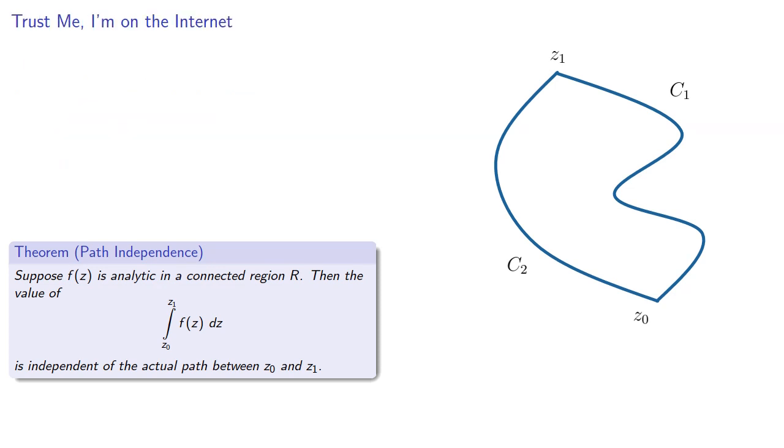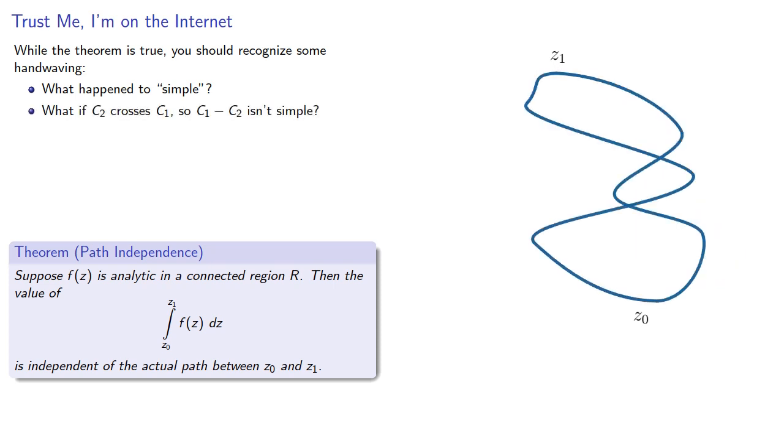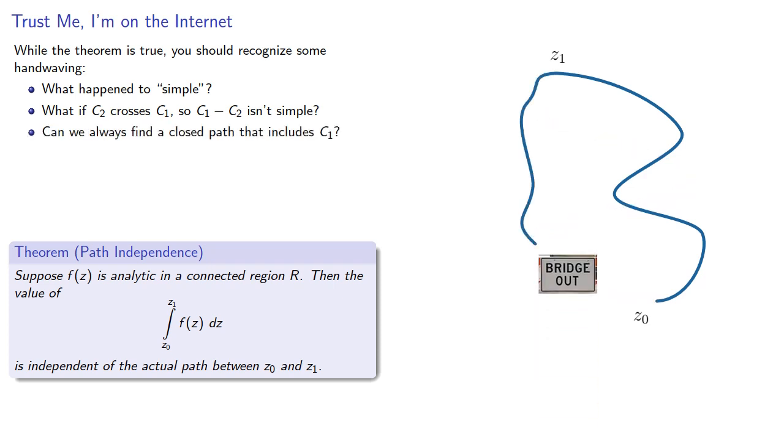As an advanced math course, we should be a little bit careful here. While the theorem is true, you should recognize that there is some hand-waving. Notice that we got rid of the requirement that we have a simple curve. So what if our curve crosses itself? And even if our first curve doesn't, what if C2 crosses C1? So C1 minus C2 isn't simple. And can we always find a closed path that includes our curve C1? The first two questions are actually relatively easy to address. The third is rather more complicated.